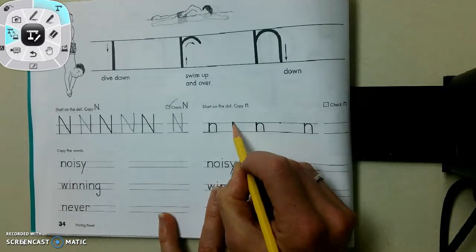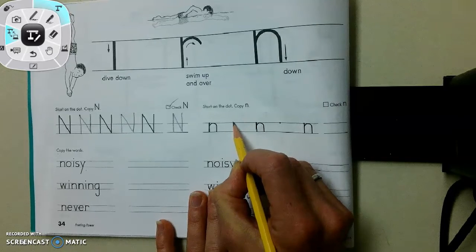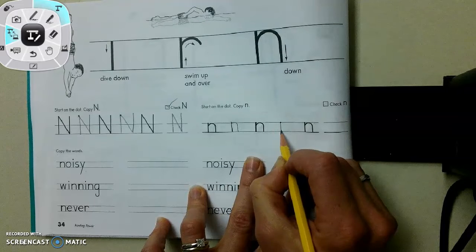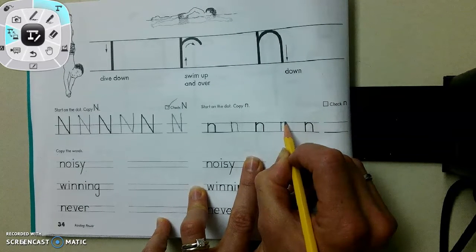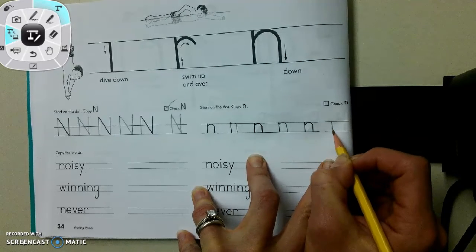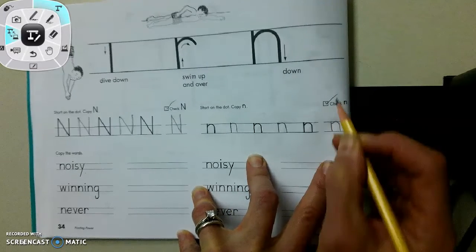Start on the dot. Dive down for your lowercase N. Swim up, over, down, and bump. Dive, swim up, over, travel right along that top line. And down, bump. Down, travel up, over, bump. Good job.